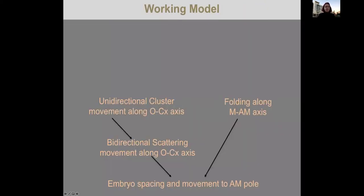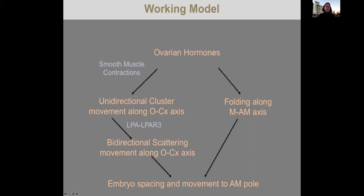To summarize, there are two kinds of embryo movement along the oviductal-cervical axis: a unidirectional clustered movement and a bidirectional scattering or spacing movement. This leads to eventual movement of embryos to the anti-mesometrial pole and implantation. Smooth muscle contractions contribute to the first phase of movement, and LPA-LPR3 contributes to the bidirectional scattering and spacing in the second phase. We are currently investigating how ovarian hormones — estrogen and progesterone — regulate the folding and muscle contractions to regulate movement, tying together both the uterine folding and embryo movement findings.